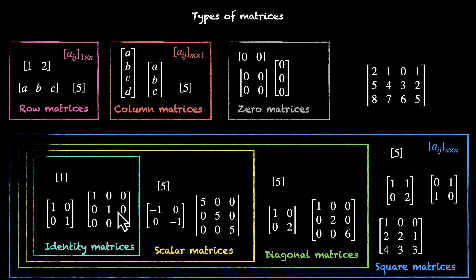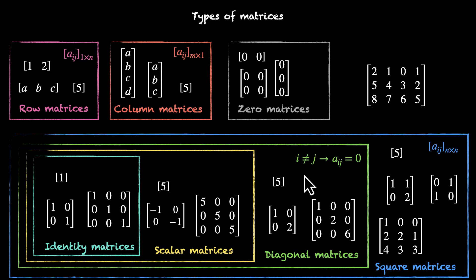For diagonal, scalar, and identity matrices, the condition is not on the order but on the elements. For a matrix to be a diagonal matrix, elements should only be on the diagonal. Which means if the row number and column number do not match — if i is not equal to j — then the element has to be zero. That's the condition. It also satisfies the condition for a square matrix, and on top of that, any element where the row and column number do not match is zero.